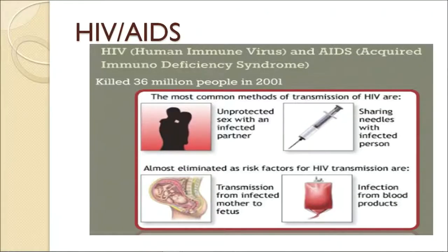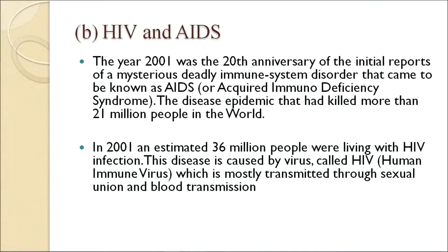The next disease is HIV or AIDS — Human Immunodeficiency Virus and Acquired Immunodeficiency Syndrome. The most common methods of transmission of HIV are: unprotected sex with an infected partner, sharing needles with an infected person, infection from blood transfusion, or transmission from an infected mother to fetus. The year 2001 was the 20th anniversary of the initial reports of a mysterious immune system disorder that came to be known as AIDS — a disease epidemic that had killed more than 21 million people worldwide. In 2001, an estimated 36 million people were living with HIV infection. This disease is caused by the virus called HIV, which is mostly transmitted through sexual contact and blood transfusion.